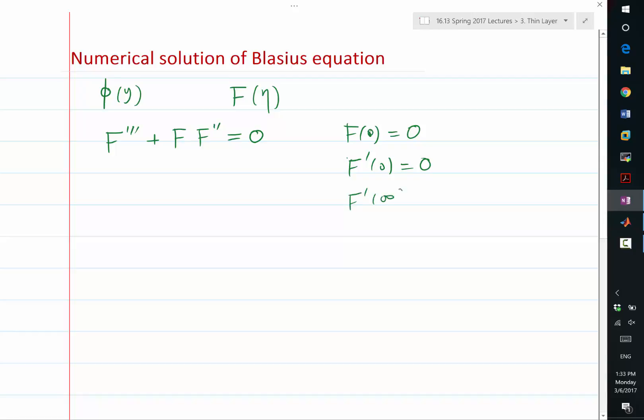f prime of infinity is equal to, in this case, one. So what is the physical meaning of that? x-directional velocity at very far away from the wall is equal to the given ue. That's what we call it, right?